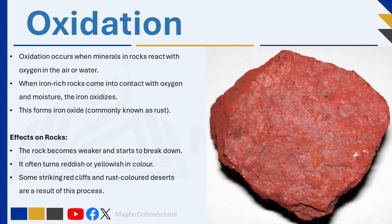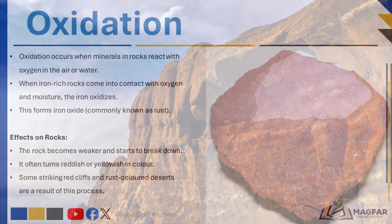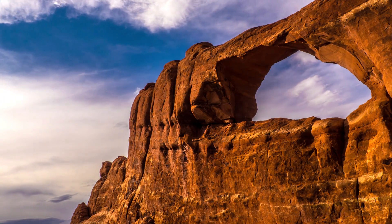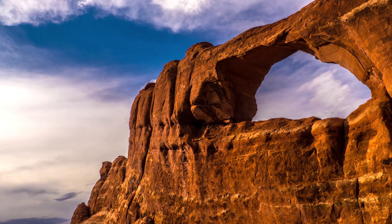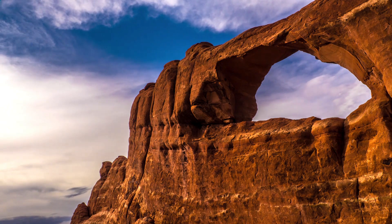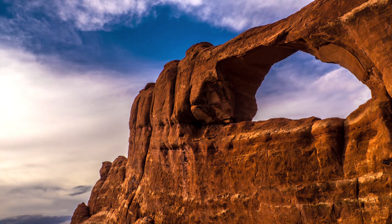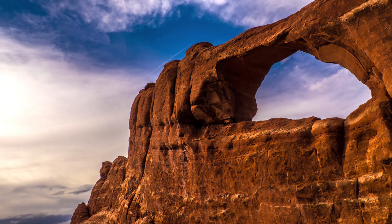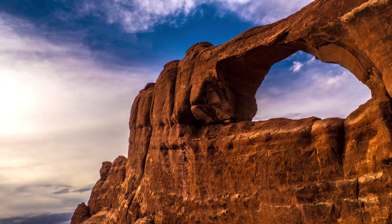Many landscapes around the world, including red cliffs and rust-colored deserts, owe their unique appearance to oxidation. Oxidation is one of the fastest-acting chemical weathering processes and significantly changes the strength and appearance of rock surfaces.